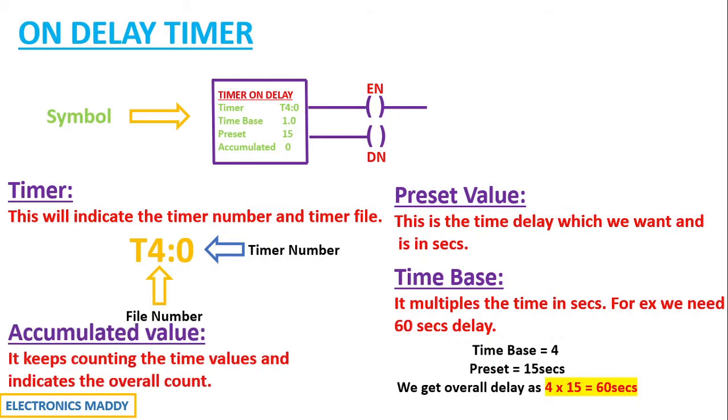Now the next question, what is accumulated value then? It basically keeps counting the time values and indicates the overall count. For example, if you're setting the preset value to 15, for us to see, we need to visually be able to see what is the actual time, isn't it? And that is given by accumulated value. It keeps counting the value from zero and tells us what is the actual value at this moment of time so that you can actually see that.